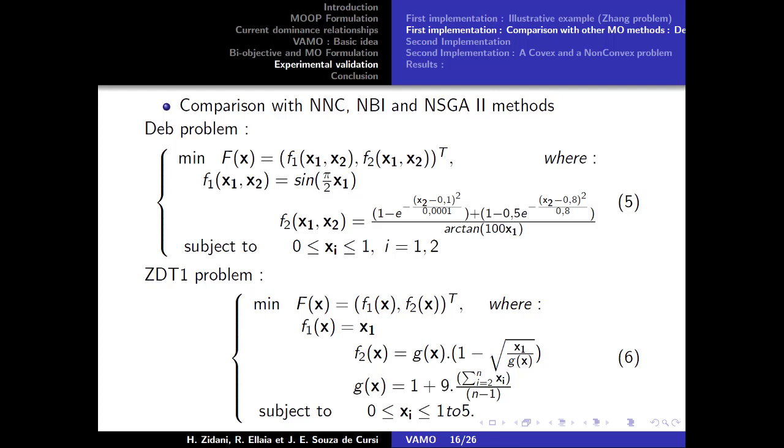The results for this first example show that the VAMO method is effective for generating enough points to represent the Pareto front.